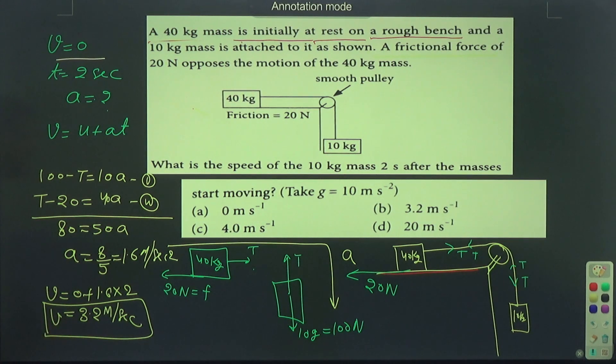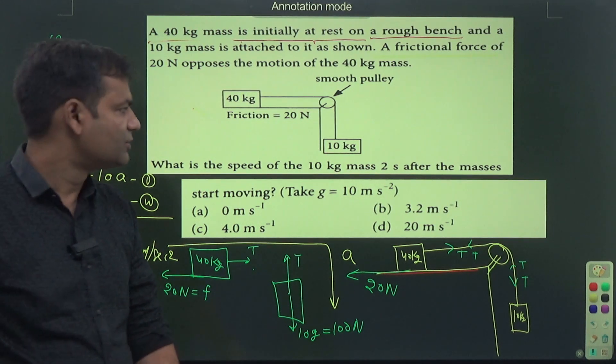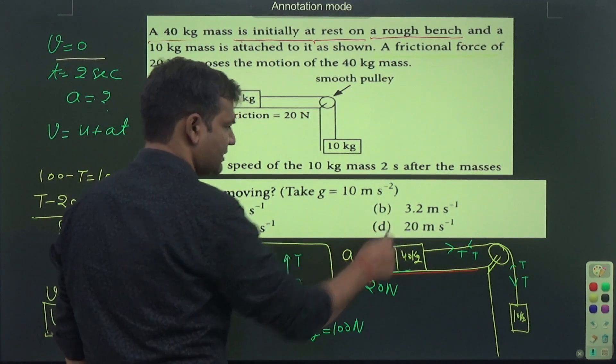We got v = 3.2 meters per second. Option B is the correct option.